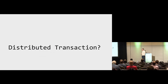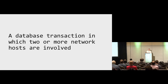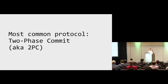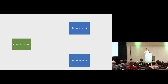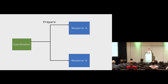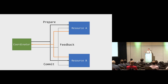A distributed transaction is just a database transaction in which two or more network hosts are involved — even if they're on the same physical server. The most common protocol is the two-phase commit. A coordinator asks each resource: can you perform this action? That's the prepare phase. Resource A: can you update the order status? Resource B: can you update the stock quantity? When all resources say yes, the coordinator tells everyone to commit.